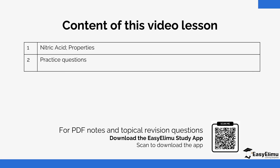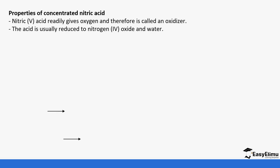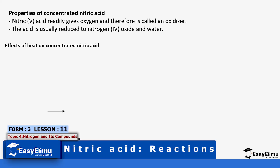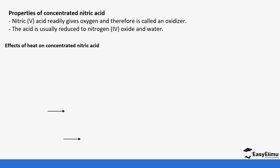First of all, nitric acid readily gives off oxygen, and that is the reason why it is referred to as an oxidizer. Nitric acid is one of the strongest oxidizing agents, especially among acids. We also have other oxidizing agents that are not acidic. The acid is usually reduced to nitrogen dioxide and water.